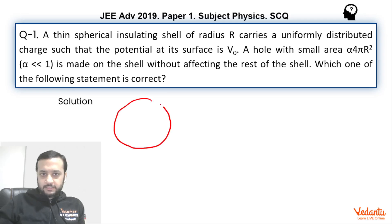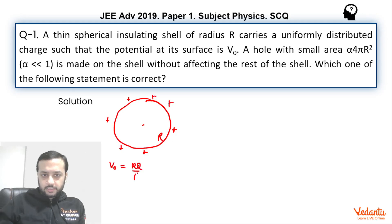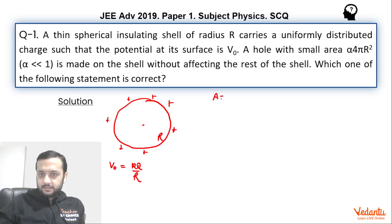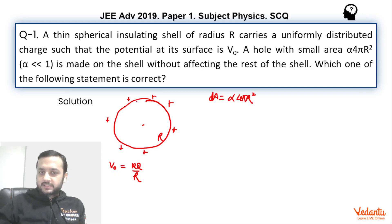Initially the charge was uniformly distributed on the shell of radius R. We can say V₀ = kQ/R. Now what we are doing is removing a small part, so a very small part of the charge will be gone. The area that has been removed, dA, is α × 4πR², where 4πR² is the total surface area of the shell and α is a very small fraction.